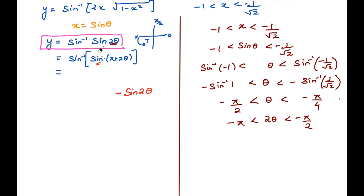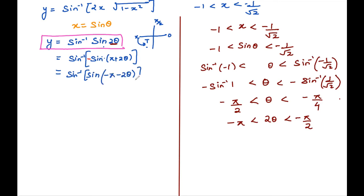The same approach applies for cos. For example: differentiate cos⁻¹(2x²−1) for x ∈ (−1, 0). Substitute x = cos θ. Then y = cos⁻¹(cos 2θ). Check: x ∈ (−1, 0) means cos θ ∈ (−1, 0), so θ ∈ (π/2, π) and 2θ ∈ (π, 2π), which is not in the principal value branch [0, π] of cos⁻¹. We try 2π minus: cos(2π − 2θ) = cos 2θ since fourth quadrant cos is positive and 2π doesn't change the function. And 2π − 2θ ∈ (0, π), which is within the principal value branch.